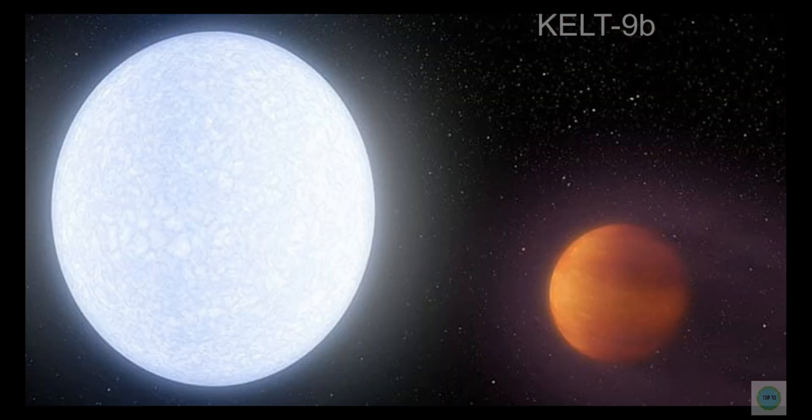Number 8 is KELT 9b. Exoplanet KELT 9b is the hottest planet we have ever found. The temperature of its star is around 9,700 degrees Celsius (17,500 degrees Fahrenheit), which is almost multiple times the 5,480 degrees Celsius (9,900 degrees Fahrenheit) surface temperature of our Sun.